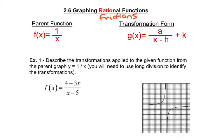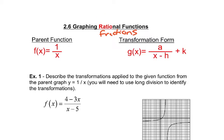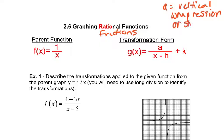Over here we have what happens when you transform. If you transform, we've got an a value that talks about if something is going to be vertically compressed or stretched. A is your vertical compression or stretch — a number between 0 and 1 would be compression, or if it is a number greater than 1, that would be your stretch. We also have the k value, which is going to move or shift this initial 0,0 point up or down.